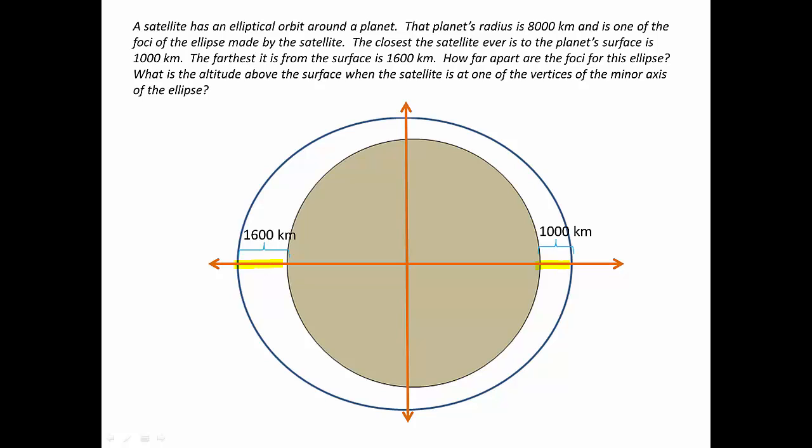which we're going to want to do because we'll probably want the equation of the ellipse, and for that we need an x and y axis. When we put the axis in, the origin is not in the center of the planet, because remember, the planet is one of the foci of the ellipse.